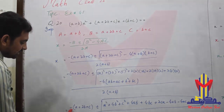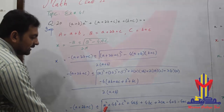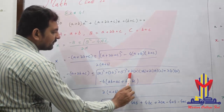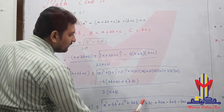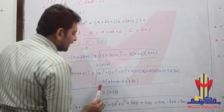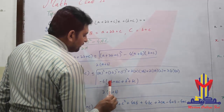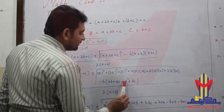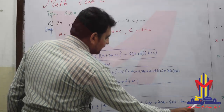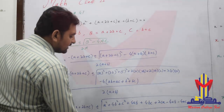Continuing the expansion inside the square root: A² + 4B² + C² + 4AB + 4BC + 2CA minus 4AB minus 4AC minus 4B² minus 4BC, all under the square root, divided by 2(A+B).